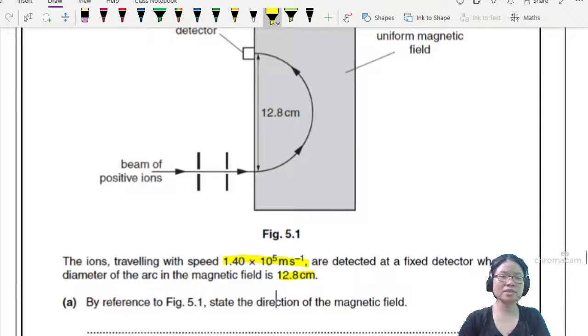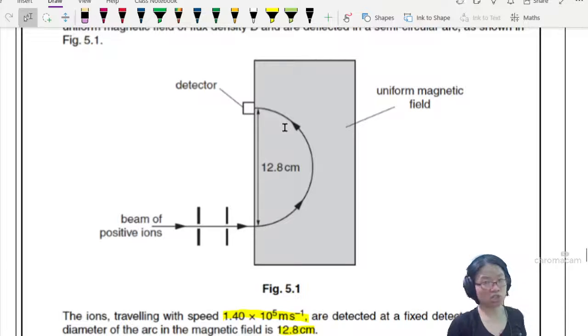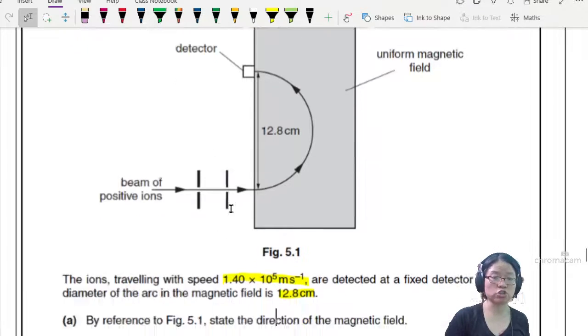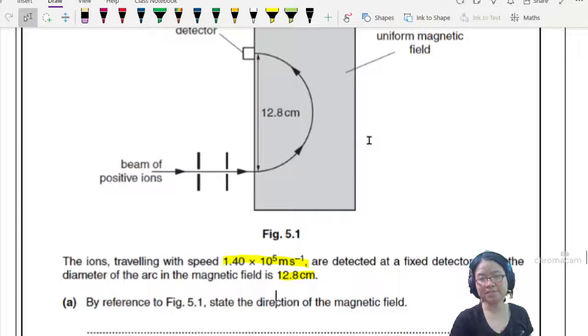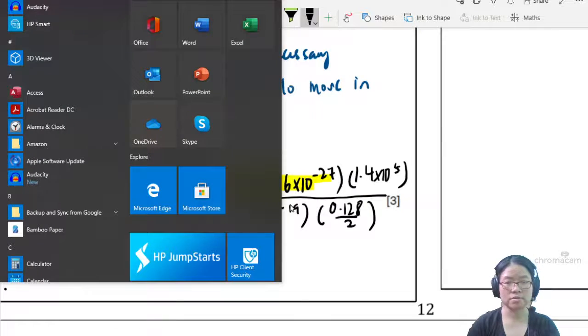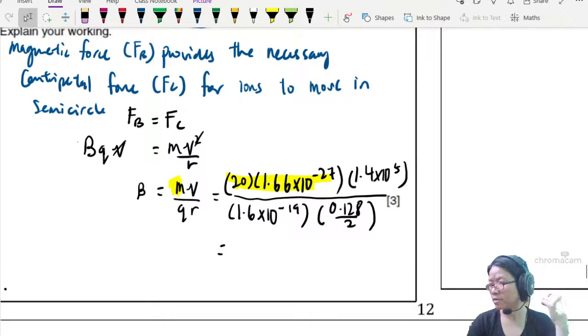So in this kind of setup of mass spectrometer, the detector can move, and depending on the distance of the detector from the velocity selector chamber, you can actually measure the value of the diameter of deflection. By reference to figure 5.1, state the direction of the magnetic field. Time to take out our left hand.